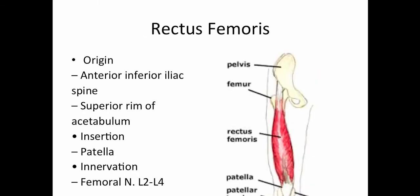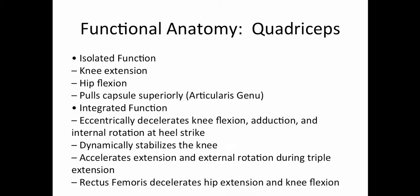The rectus femoris originates on the anterior inferior iliac spine and the superior rim of the acetabulum. It then inserts on the patella. The isolated function of the quadriceps is knee extension and hip flexion, and they also pull the capsule superiorly — this is called an articularis genu.